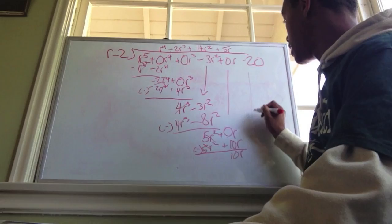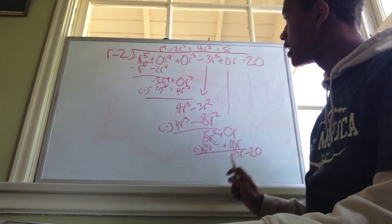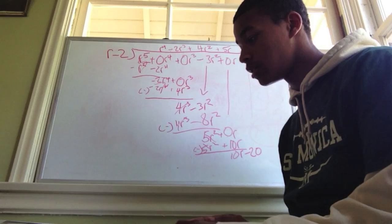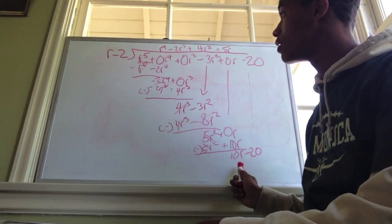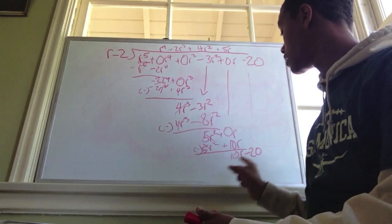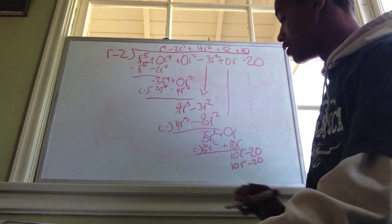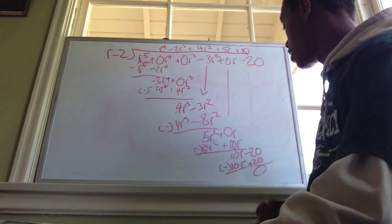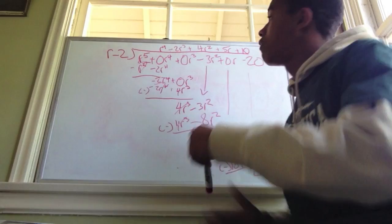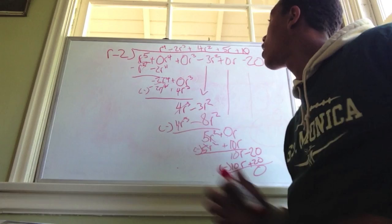Bring down the negative 20. Last part: to get 10r minus 20, we need 10. Put plus 10 at the top. 10 times r equals 10r, and 10 times negative 2 equals negative 20. Subtract — that flips the sign — and you get 0. Your answer is r⁴ minus 2r³ plus 4r² plus 5r plus 10.